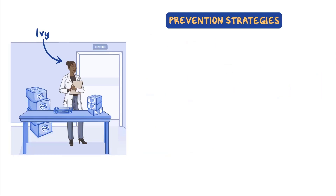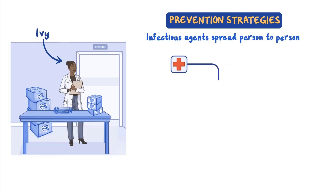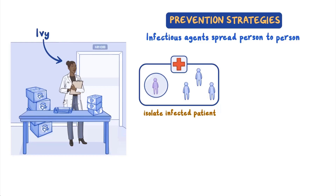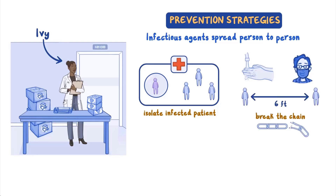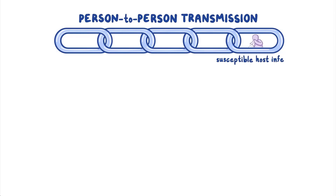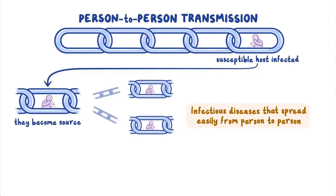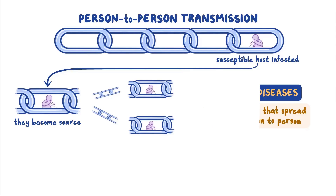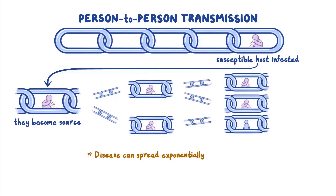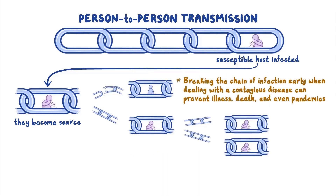Some prevention strategies are designed specifically for infectious agents that are spread from person to person. For example, in a hospital, Ivy might isolate an infected patient from others to prevent spread from a human reservoir to any new patients. Hand washing, mask wearing, and physical distancing are also prevention strategies used to break the chain of person-to-person transmission. In person-to-person transmission, once a susceptible host is infected, they become a source for the infectious agent and can transmit to yet another susceptible host. This means one person with the disease could potentially transmit to more than one susceptible host. Infectious diseases that spread easily from person to person are also called contagious diseases. This is how diseases can spread exponentially, and why early detection and prevention measures are so important. Breaking the chain of infection early when dealing with a contagious disease can prevent illness, death, and even pandemics.